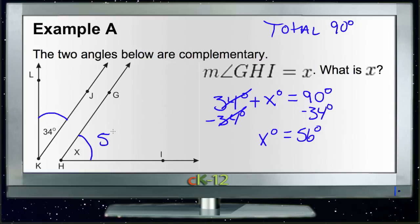Then we know that angle X must be 56 degrees, because only 56 degrees could be added to 34 degrees, and have our 90 degree measure for our two complementary angles.